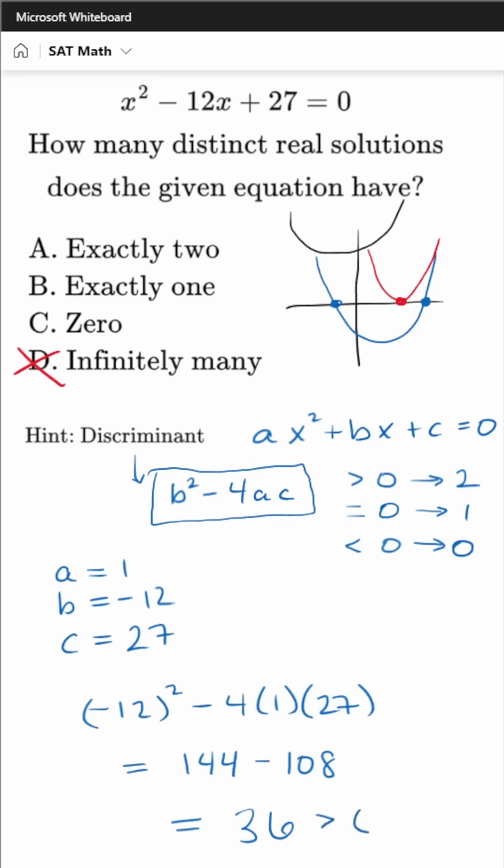36 is obviously a positive number, it's greater than zero. And so therefore, without even looking at a graph, we've determined that there are exactly two real solutions.